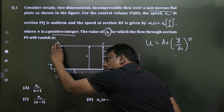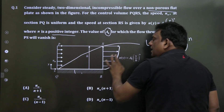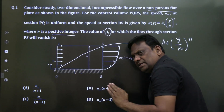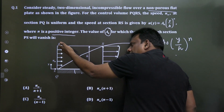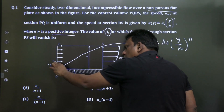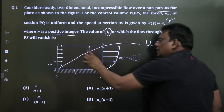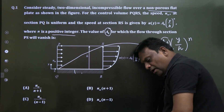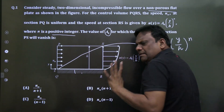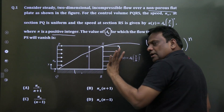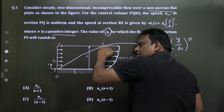As the boundary layer grows, due to reduction in velocity there is a reduction in mass flow rate. The remaining fluid flows through section PQ. If 10 units are entering and 8 are leaving through one section, the remaining 2 will leave through PS. That is the concept of mass conservation.